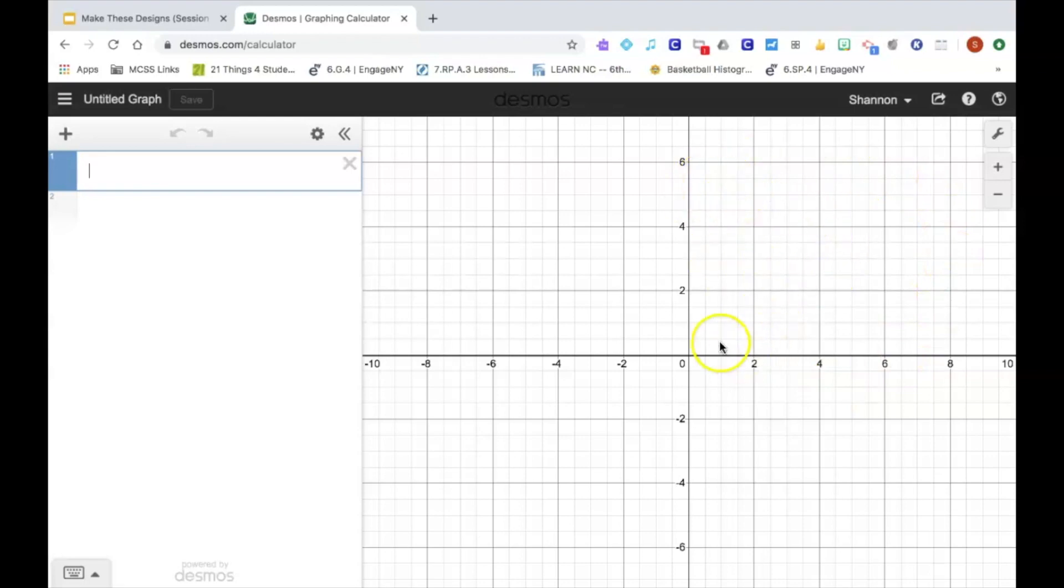And the first thing I'm going to do is change these settings so that my x-axis will go from negative 7 to positive 7, and then my y-axis will go from negative 7 to positive 7. So I do this by clicking the Graph Settings button.